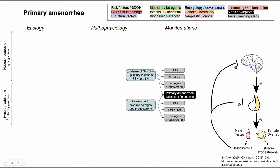In contrast, in hypergonadotropic hypogonadism, you have high GnRH and high FSH and LH. The problem is that the ovaries aren't working — they aren't producing estrogen and progesterone — so you fail to have that feedback loop back to the pituitary and hypothalamus. GnRH and FSH/LH secretions will be higher in an attempt to increase estrogen production, but that attempt fails because the ovaries are unable to produce estrogen and progesterone.